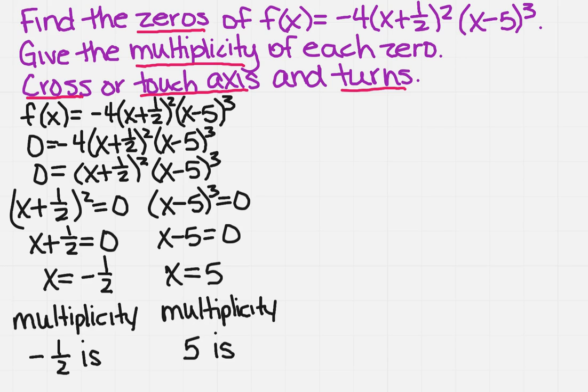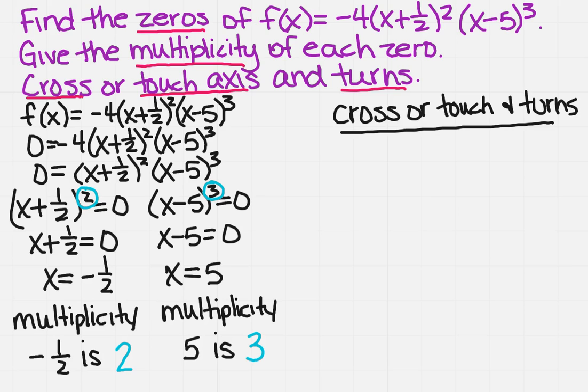So now that I have my zeros I need to find the multiplicity. When I'm doing the multiplicity remember I need to go back and look at what that original term was raised to. So if I look at the minus one half it was originally raised to a two. So the multiplicity of negative one half will be two. For my five I go back and look it was raised to a three. So the multiplicity of the five zero is three. So we have our zeros and we have the multiplicity at each of those zeros.